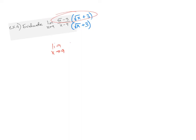Let's simplify this numerator by multiplying. If you notice, that's kind of a difference of squares. Square root of X times square root of X gives me X. The outer and inner terms — plus three square root of X and minus three square root of X — cancel out nicely. The last term is negative nine. Down here in the denominator, do not simplify it — leave it as X minus nine times the conjugate, square root of X plus three. Leave it like that.